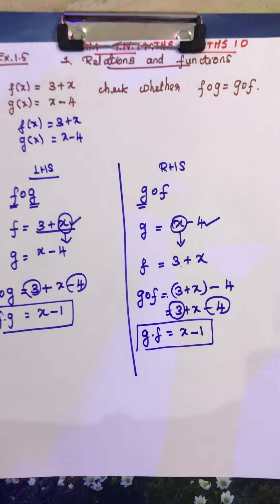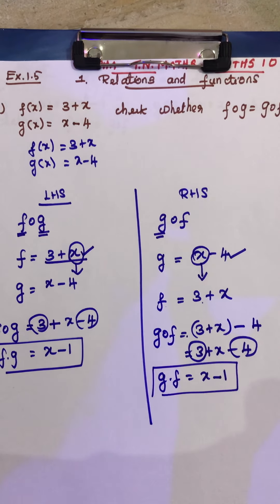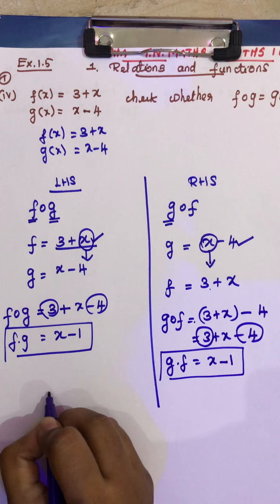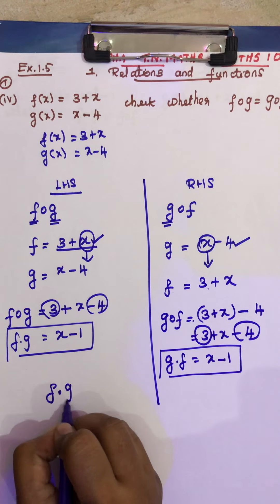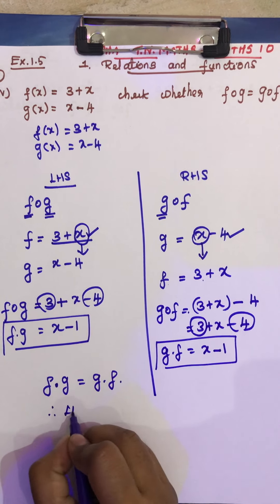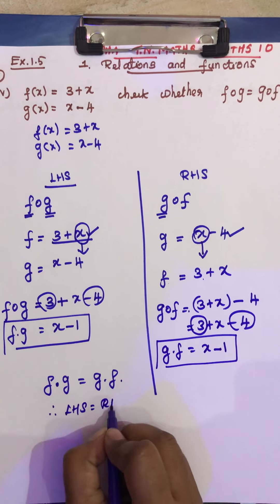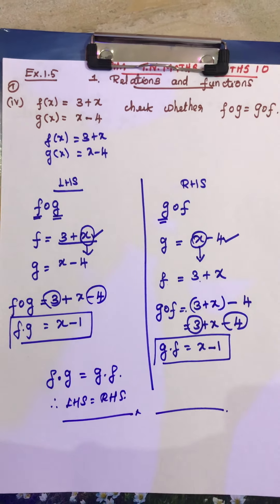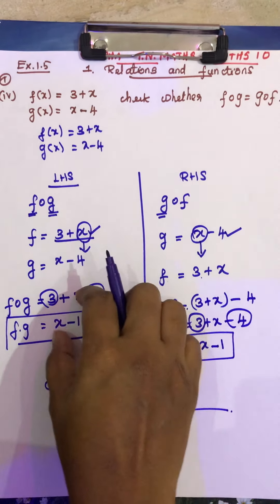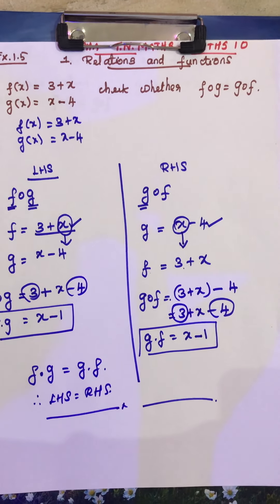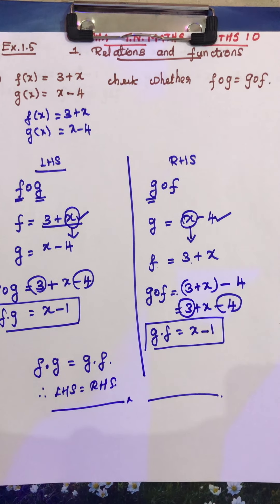Okay students, so here is g dot f, f dot g equals, so LHS and RHS are equal. Okay students, do you understand, this method is easier to answer. Hope you all understand, so please after seeing the video, do the sum. Okay, thank you.